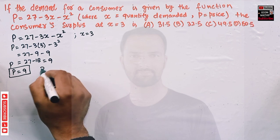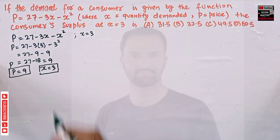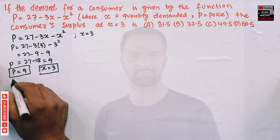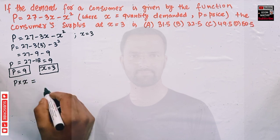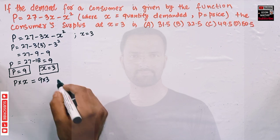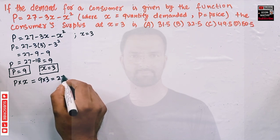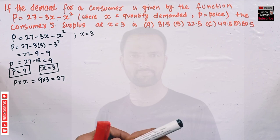The equilibrium quantity is x = 3, which is given. The total expenditure by the consumer equals price times quantity, that is p × x = 9 × 3 = 27.